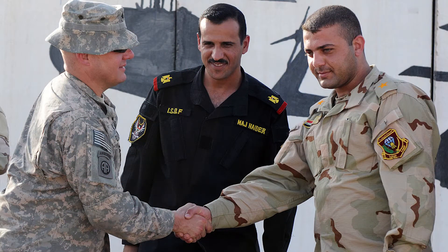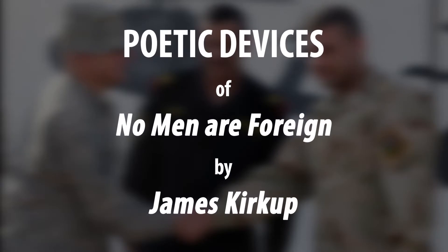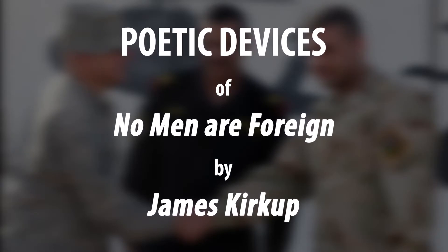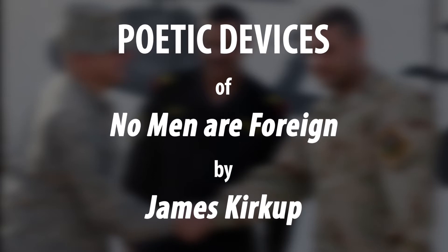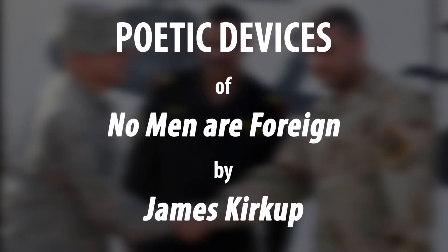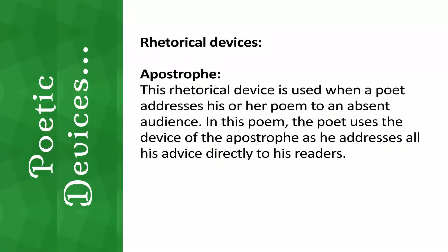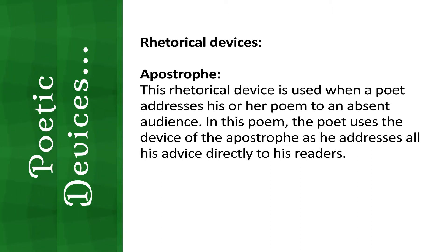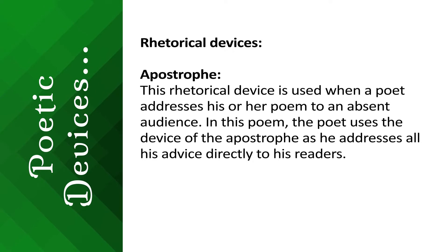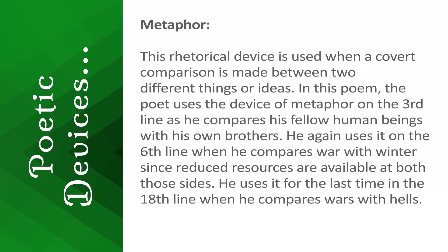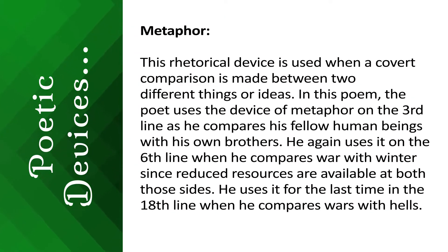Welcome to Beaming Knots. Today we're going to look at the poetic devices of the poem 'No Men Are Foreign' by James Kirkup. The first device is apostrophe — a rhetorical device used when a poet addresses his or her poem to an absent audience. In this poem, the poet uses apostrophe as he addresses all his advice directly to his readers.